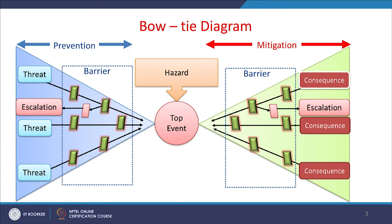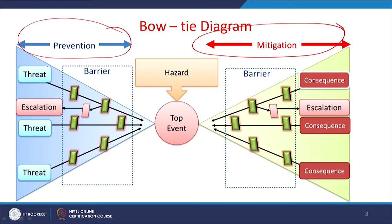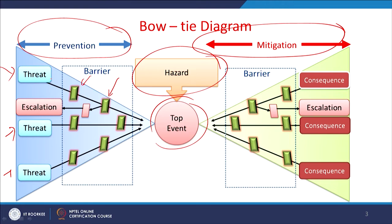In a typical bow tie diagram, there are two different aspects: prevention and mitigation. There are various threats related to the process, and these threats are supplemented by barriers. There is a hazard and a top event. The threats come through different barriers, and sometimes these barriers prevent escalation. Similarly, there are several consequences approaching the top event, and sometimes they are inhibited by barriers; otherwise it may go to escalation.